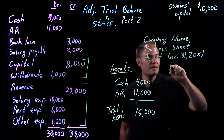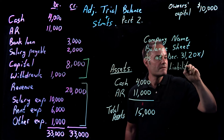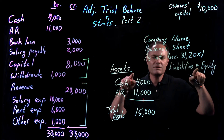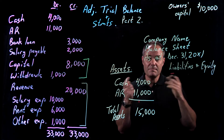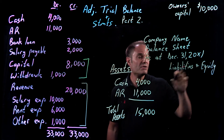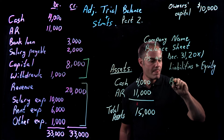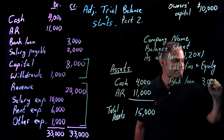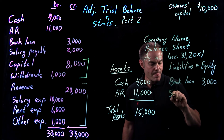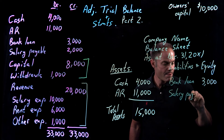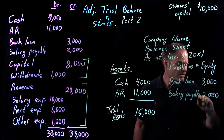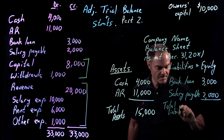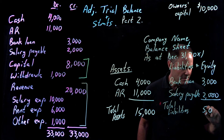On this side of the balance sheet is liabilities and equity — or owner's capital if you want; I'm just going to call it equity. Does this look familiar? It's the accounting equation — the balance sheet basically is the accounting equation. On this side we have our liabilities: we have bank loan at $3,000, and we have salary payable at $2,000. So our total liabilities are equal to $5,000. It's important to show what the total liabilities are.